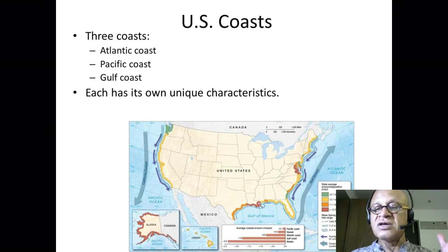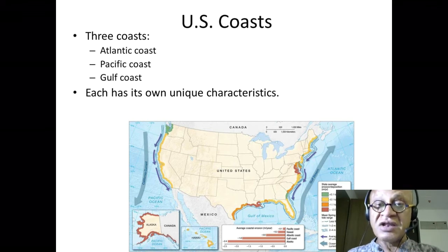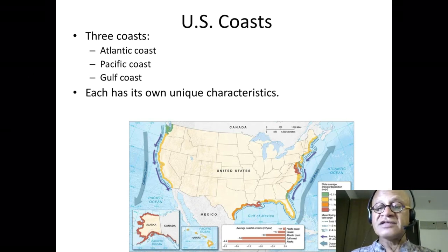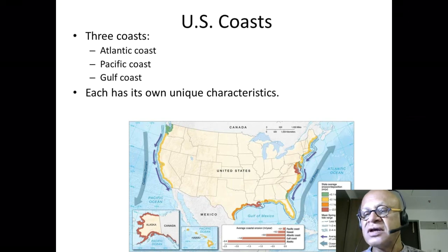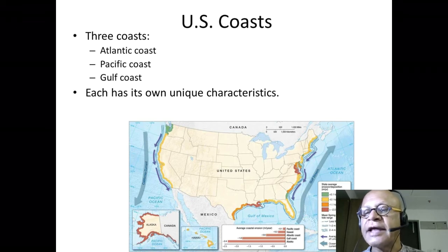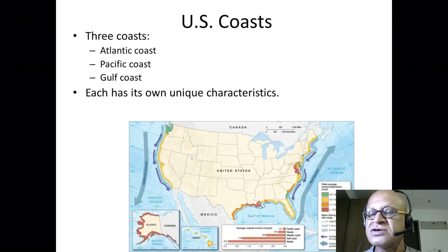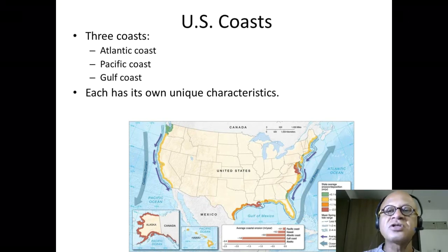The Gulf Coast is the most erosional coast at more than a meter — minus 1.3 meters per year, meaning it's retreating at 1.3 meters per year. Alaska is way off, on the North Pacific, going at minus 2.4 meters per year. So we can see the different tidal characteristics and spring tide ranges, and the average erosional or depositional rates are shown here in different colors. Those are the broad features.